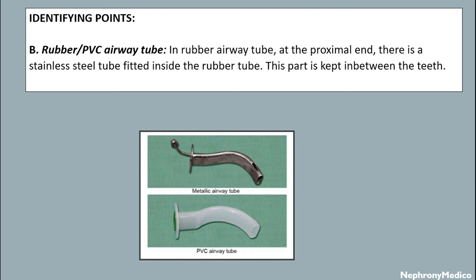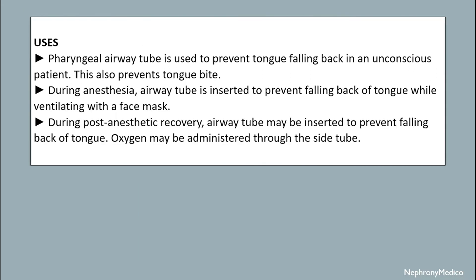The identifying points of a PVC or rubber airway tube: at the proximal end there is a stainless steel tube fitted inside the rubber tube. This part is kept in between the teeth.